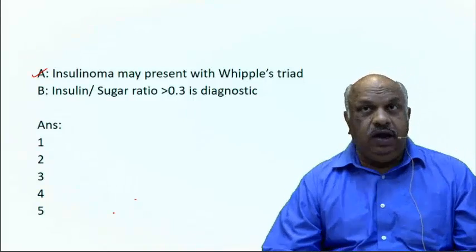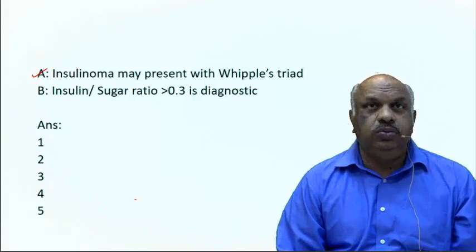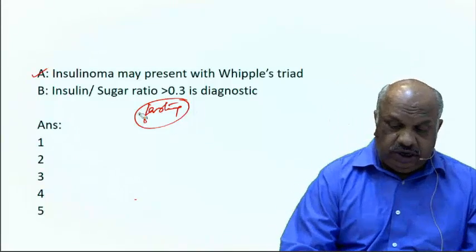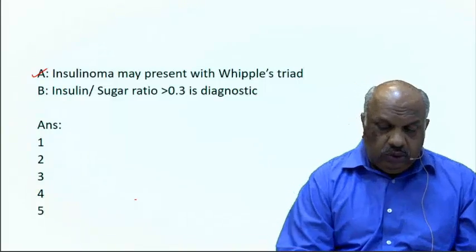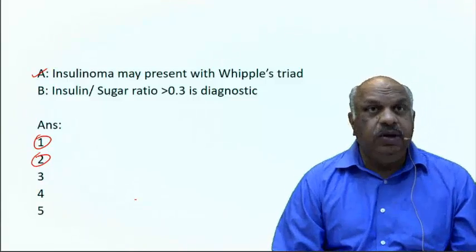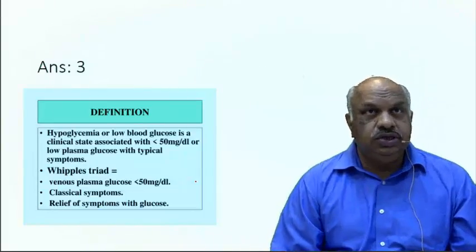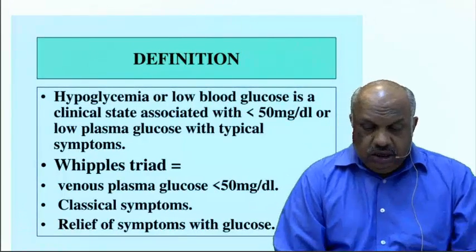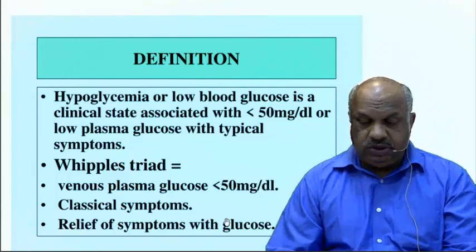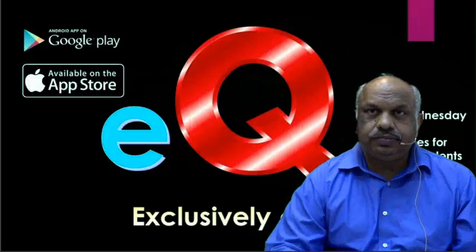To summarize: Option A — insulinoma may present with Whipple's triad — is absolutely correct. Option B — insulin-to-sugar ratio more than 0.3 is diagnostic — is an incomplete statement because the word 'fasting' is missing; without it, it could be insulin injection. Therefore the correct answer is option three: A is correct and B is wrong. Whipple's triad is defined as venous plasma glucose less than 50 with classical symptoms relieved by sugar.